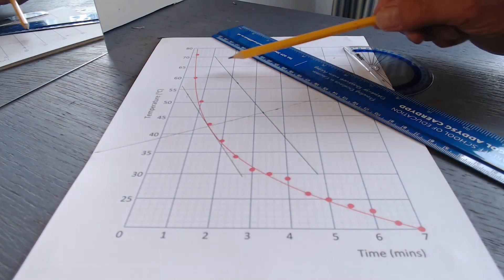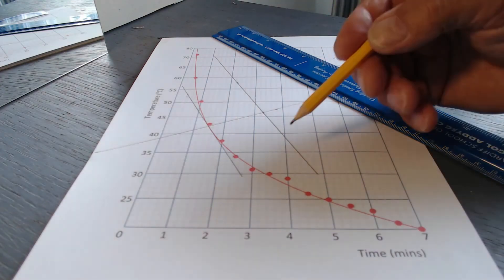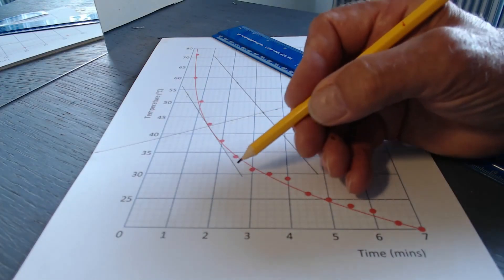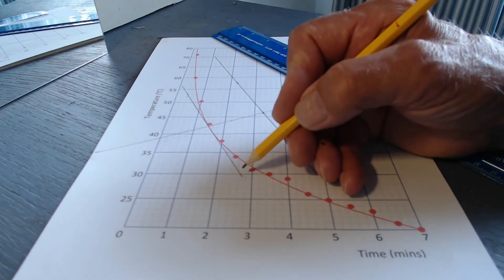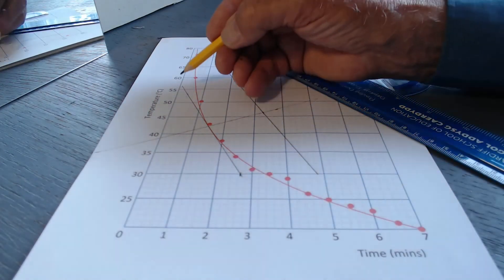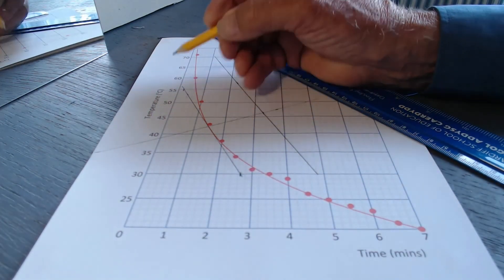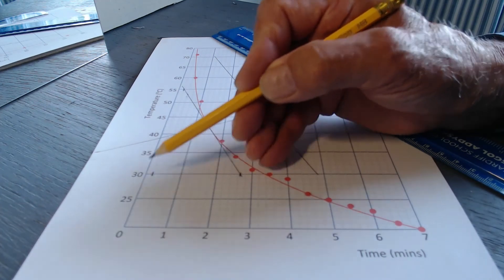So let's now find the gradient of this line. Or this one, maybe you'd prefer me to do the one that actually touched the curve. So we'll take this one. Right, so we'll do from this point here, this point there, and therefore there.